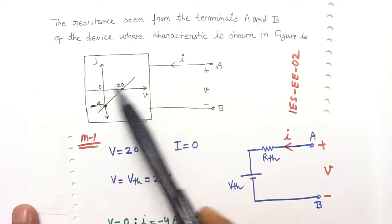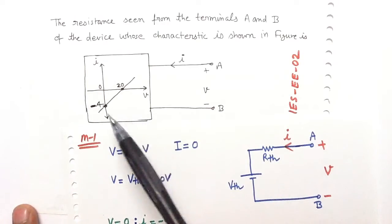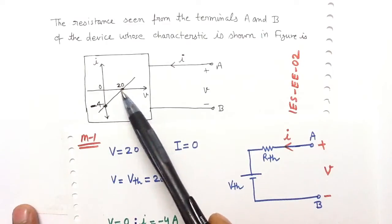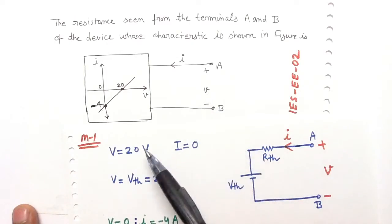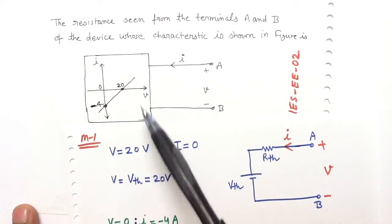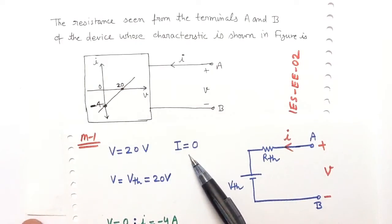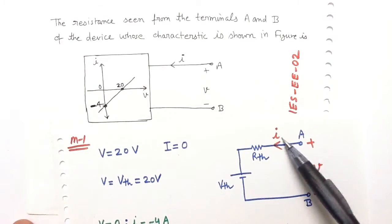If we look at this device's characteristics, this point denotes the voltage drop across the points A and B is 20V when this current is 0. This means that when this current is 0, then A and B are open circuit.